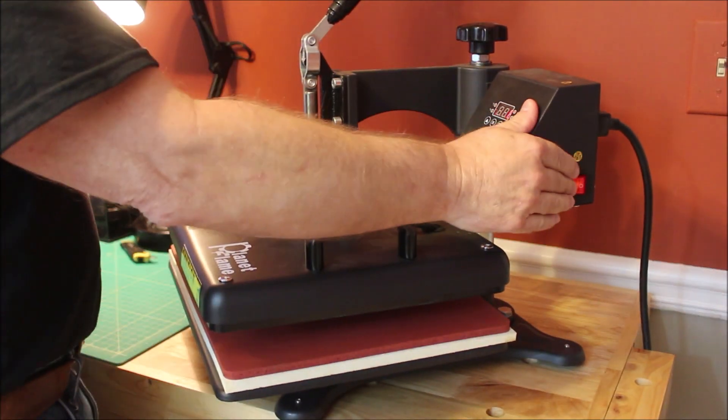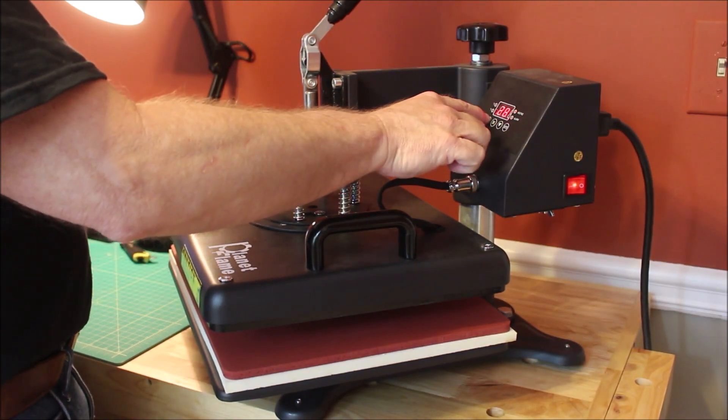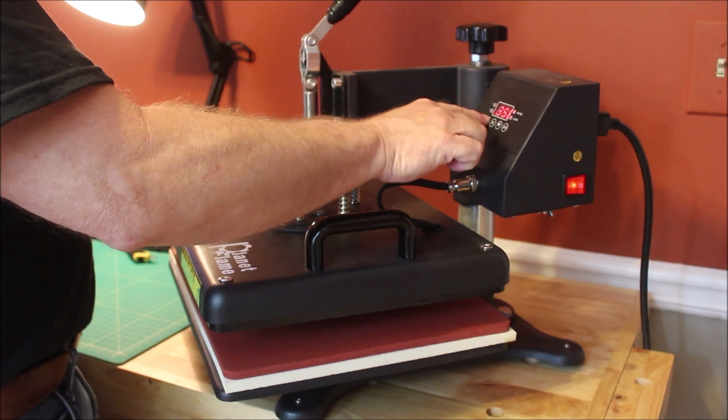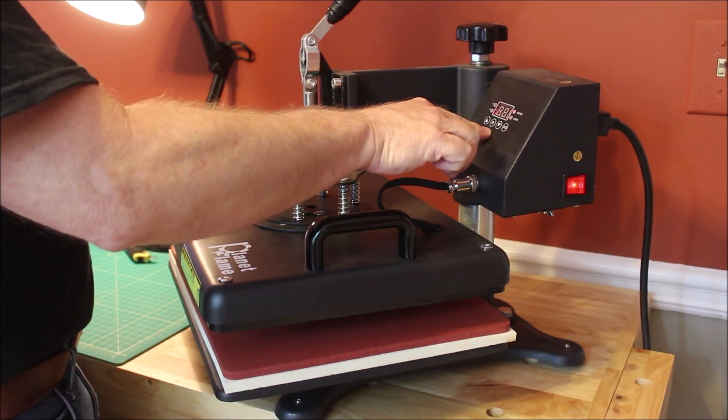Now I'm going to turn the heat press on and it'll take it a few minutes to heat up. But I'm going to set the temperature at 365 degrees Fahrenheit and I'm going to set the timer for 90 seconds.